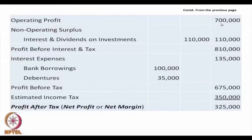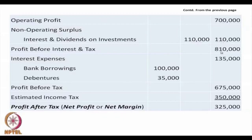Subtracting 500,000 from 1,200,000, we get 700,000 rupees as operating profit. To this we add other income from other sources — if the company has invested in fixed deposits it gets interest, and if it has invested in other company shares it gets dividends. These are non-operating surplus. Interest and dividends together amount to 110,000 rupees, so profit before interest and tax is 810,000 rupees.